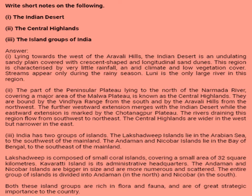Short notes: first, the Indian Desert. Lying towards the west of the Aravalli Hills, the Indian Desert is an undulating sandy plain covered with crescent-shaped and longitudinal sand dunes. This region is characterized by very little rainfall, an arid climate and low vegetation cover. Streams appear only during the rainy season. Luni is the only large river in this region.